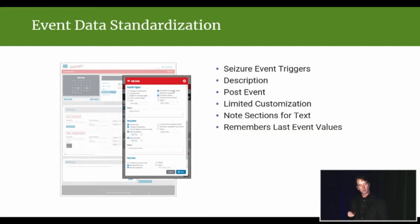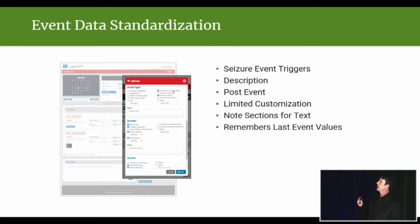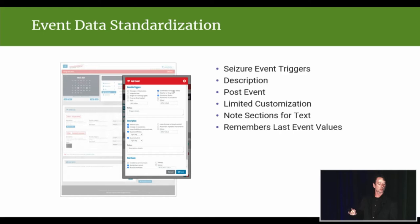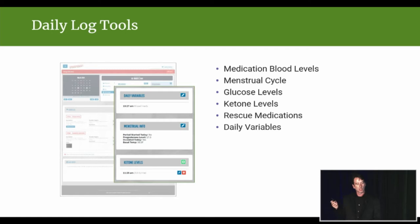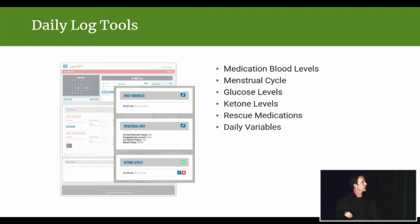The other sections of the diary include triggers. We went out and collected all of the paper diaries that existed and standardized how those were included into the Seizure Tracker system — we were inclusive and added as many as we could. You can go in and just check box these values when entering diary information. There's a trigger section, a description section, and a post-event section, each with some customizability. Other data points collected include medication levels, a diet tool, and hormonal shifts. Every piece of data you put into Seizure Tracker can be visualized and looked at against seizure activity.